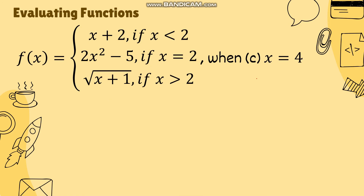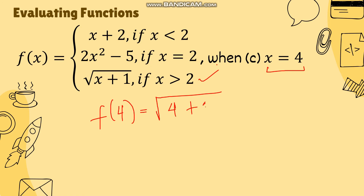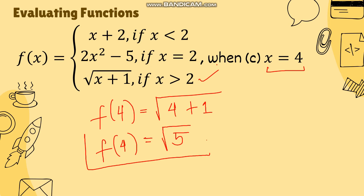For the last example, let's use the same piecewise function with x equal to 4. Since 4 is greater than 2, we use the third sub-function, which is the square root of x plus 1. So f(4) equals the square root of 4 plus 1, which is the square root of 5. We cannot simplify further, so f(4) is equal to √5. That is how you evaluate a piecewise function.